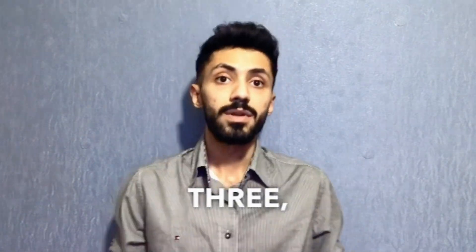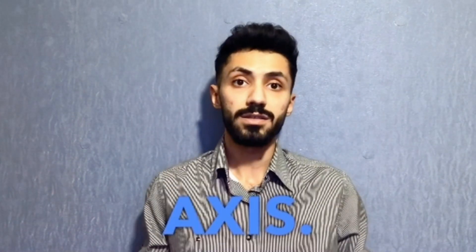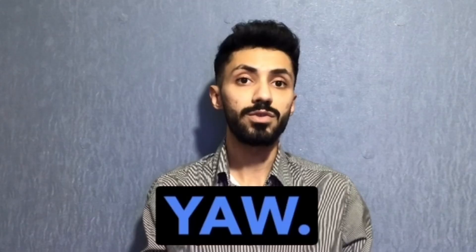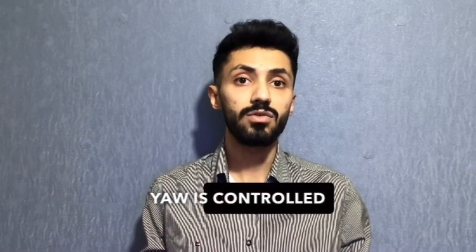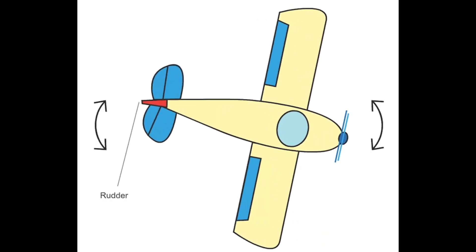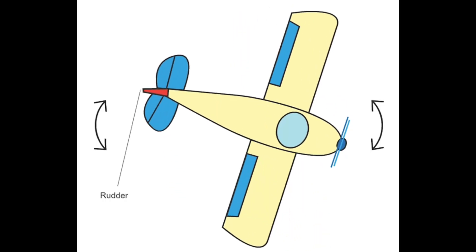Third, the normal axis. Its rotation about the normal axis is used for yaw. Yaw is controlled by the rudder.